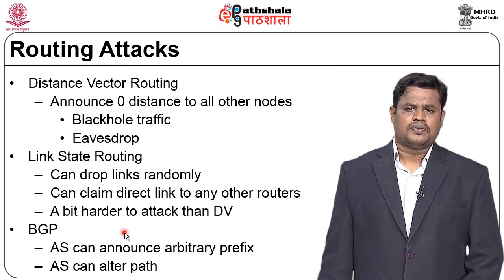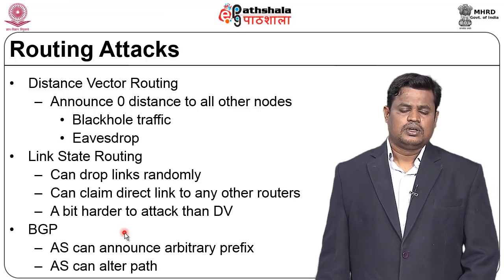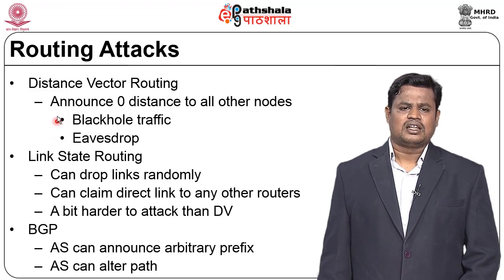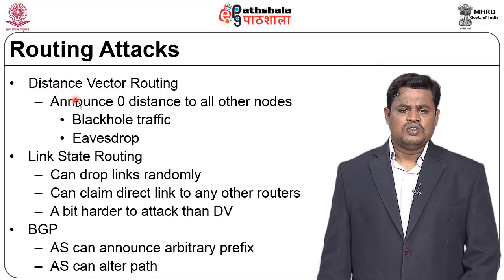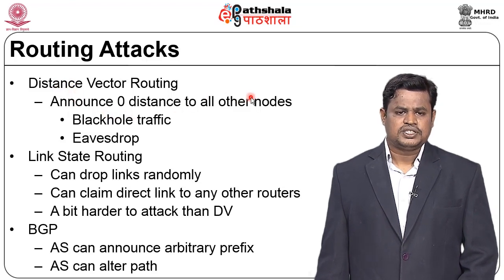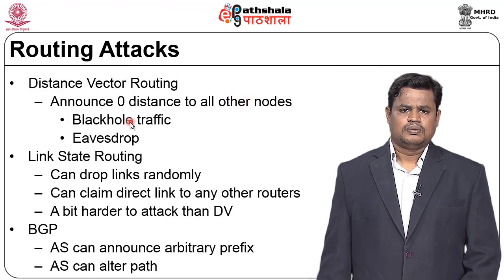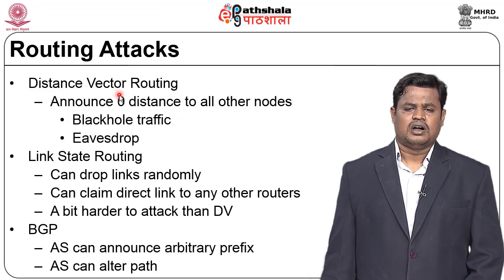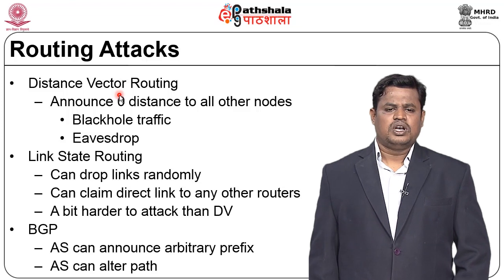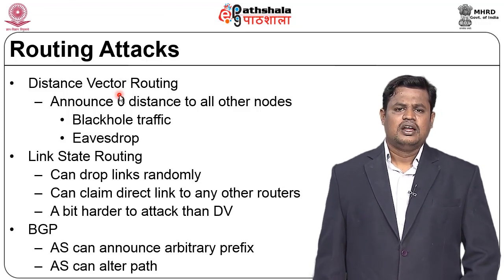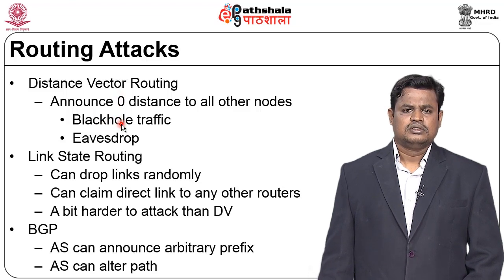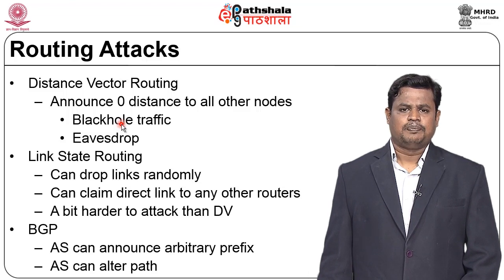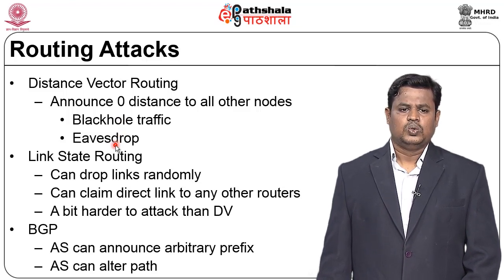Routing is the process of finding the best path to a destination based on metrics. In distance vector routing, an attacker announces zero distance to all nodes, creating a black hole — since everyone believes this is the best path, all legitimate traffic is attracted to the attacker's machine and dropped instead of reaching the correct destination.